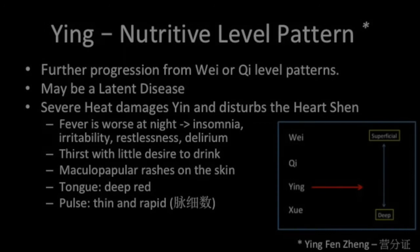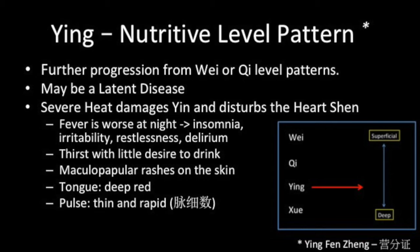Diseases at the Ying or nutritive level have either progressed from the Qi level or could be latent diseases acquired in a previous season that now manifest themselves. Severe heat has damaged the patient's yin, provoking thirst. The disease now starts to affect the mind, which in TCM is strongly related to the heart Shen or spirit. Rashes may begin to appear on the skin. The tongue is now deep red and the pulse thin and rapid.